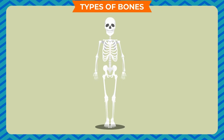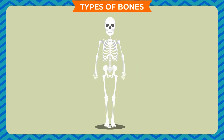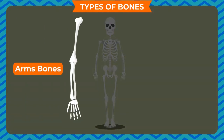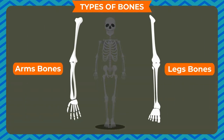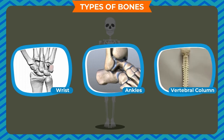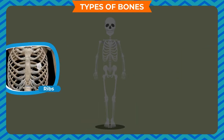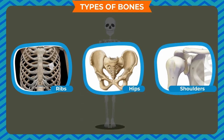Types of bones: The skeleton is formed of three types of bones — long bones, short bones, and flat bones. Long bones are found in arms and legs; they are long and cylindrical with thick and broad ends. Short bones are found in the wrist, ankles, and vertebral column. Flat bones are found in the ribs, hips, and shoulders, and they protect vital organs of the body.